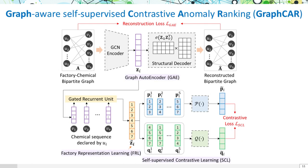We've developed GraphCAR. It maps food factories and their chemical declarations into a bipartite graph, processed by a graph autoencoder to understand hidden patterns. It uses self-supervised contrastive learning on factory representations to spot unusual patterns, effectively highlighting factories likely engaging in illicit activities by focusing on deviations in chemical usage.